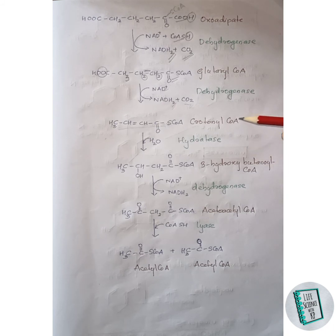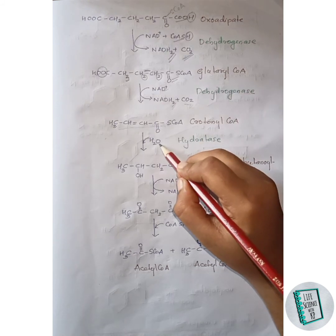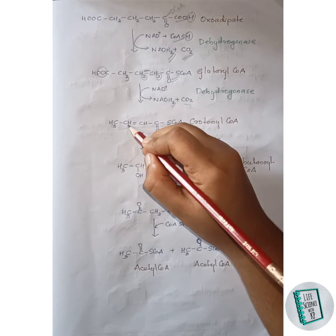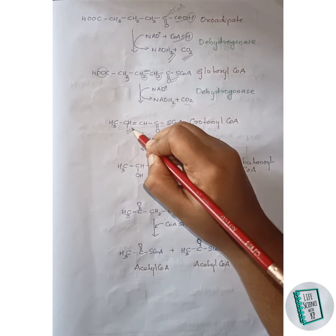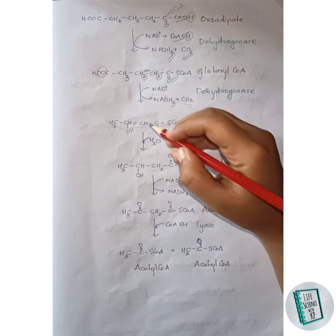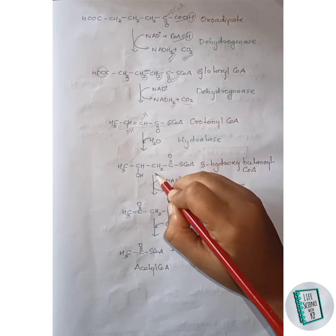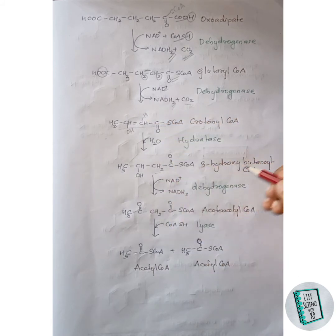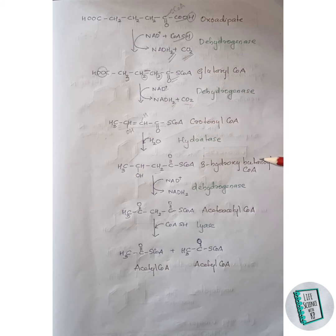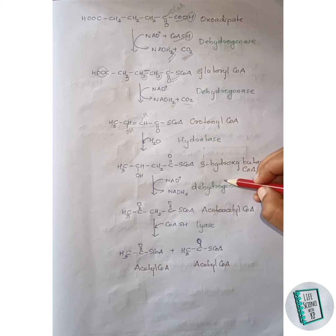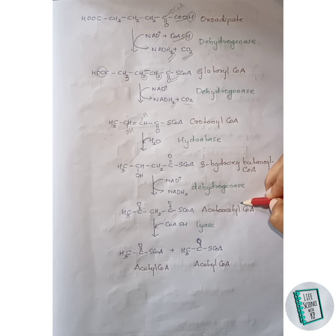Crotonyl-CoA then in the presence of hydratase enzyme forms 3-hydroxybutanyl-CoA. A water molecule is added: the OH group of water joins with one carbon to form an OH group, and the hydrogen of water attaches to the other carbon to form CH2. Thus 3-hydroxybutanyl-CoA is formed.